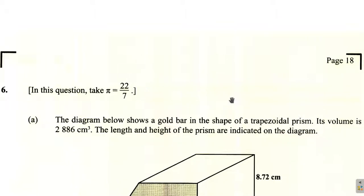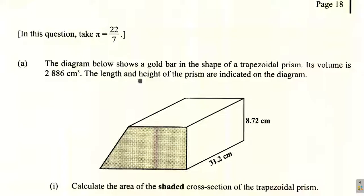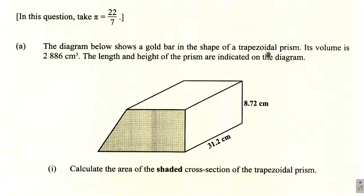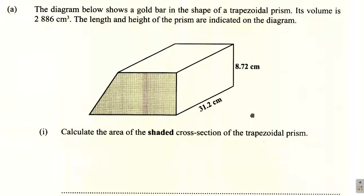We're looking at question 6 of the May 2024 Seaside Mathematics paper. This is part A. They said to use pi, take pi as 22 over 7. The diagram below shows a gold bar in the shape of a trapezoidal prism. Its volume is 2886 cm³. The length and height of the prism are indicated on the diagram. Calculate the area of the shaded cross-section of the trapezoidal prism.